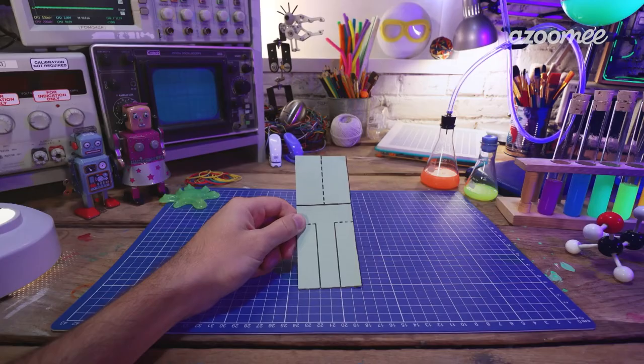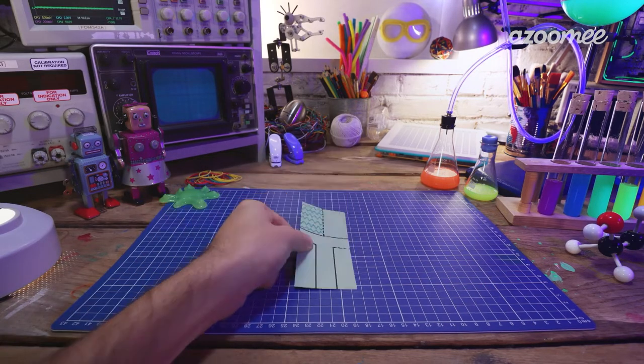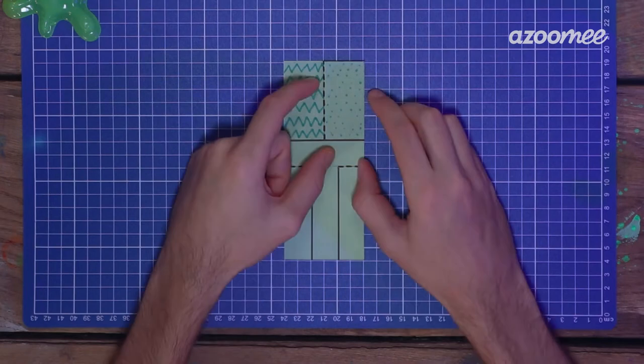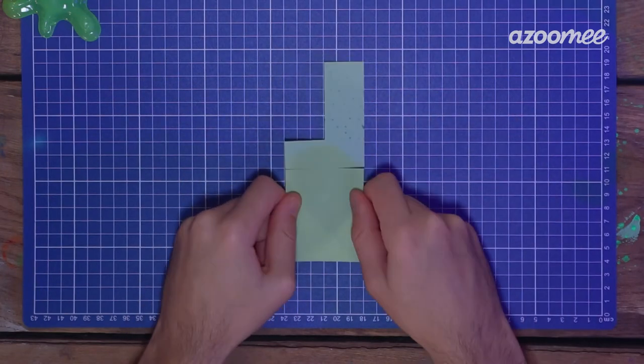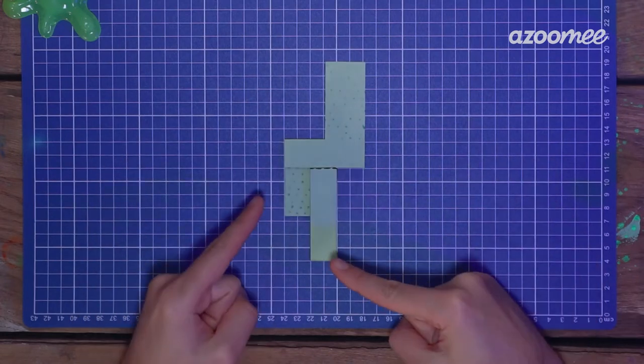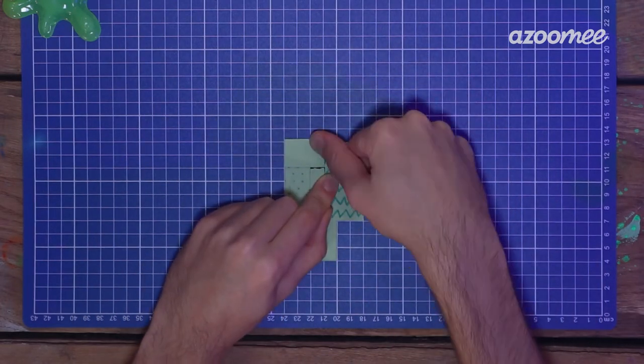Now grab some colored markers or anything you'd like and decorate your helicopter. Lay your helicopter down and fold down this blade. Turn your helicopter over and fold in your two base pieces. Then fold down the other blade.